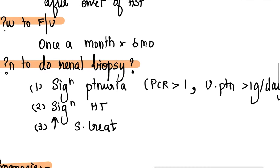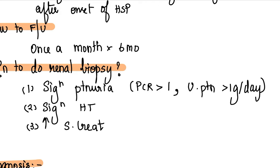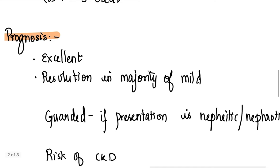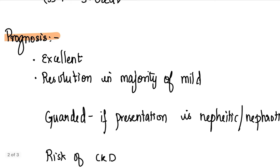You do a renal biopsy in Henoch-Schonlein purpura if the patient has significant proteinuria as defined by a protein creatinine ratio of more than one, or urine protein of more than one gram per day, significant hypertension for that age and sex and height, of course, increased serum creatinine. So these are the conditions in which you do a renal biopsy.